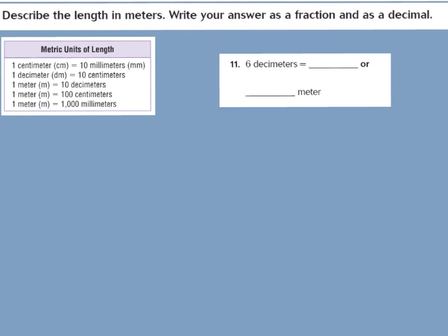We want to write metric units of length as a fraction and a decimal. We have 6 decimeters and want to change that to meters. My chart says there are 10 decimeters in one meter, so the denominator is 10. We have 6 decimeters out of 10, so the fraction is 6 tenths. In decimal form: zero and 6 in our tenths place, so 0.6.